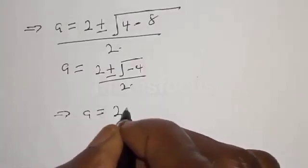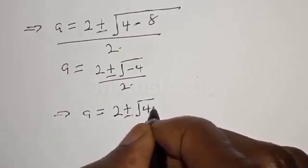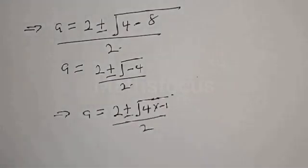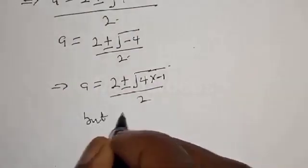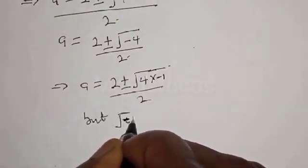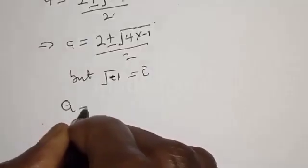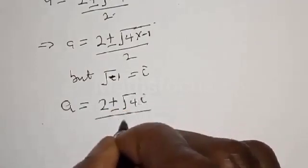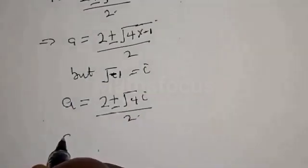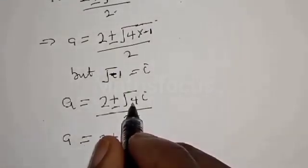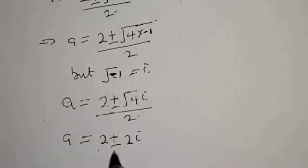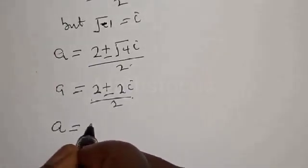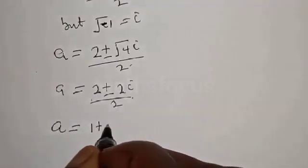We have a equals 2 plus or minus square root of minus 4, over 2. This simplifies to 2 plus or minus square root of 4 times minus 1, over 2. Since square root of minus 1 equals i, we get a equals 2 plus or minus 2i, over 2. Therefore, the final answer for the first case is a equals 1 plus i or 1 minus i.